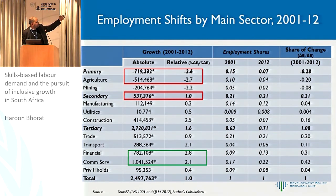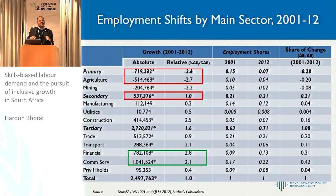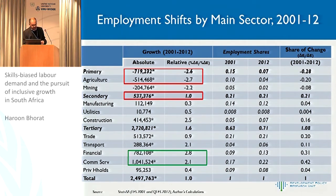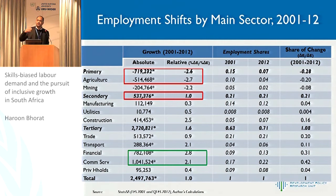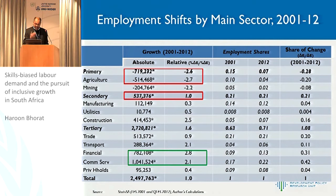Losses in employment have been in agriculture and in mining. An inclusive growth story, in the East Asian sense, would be a fast-growing light manufacturing sector — and it's very clear that in the South African context you haven't seen this. Manufacturing relative employment growth is about 0.3%. Essentially, what you see is employment shifts of rapid growth in the public sector and financial and business services — which has an embedded statistical anomaly around temporary employment service providers, a large proportion of whom are security workers — and job destruction in the primary sectors.